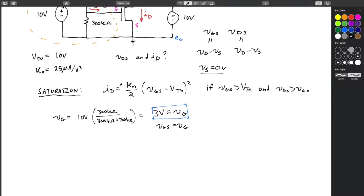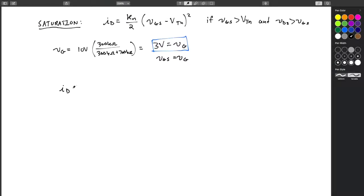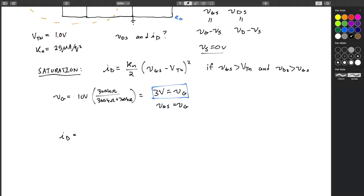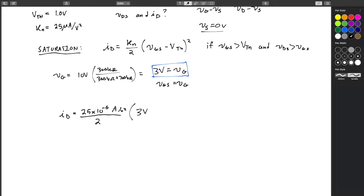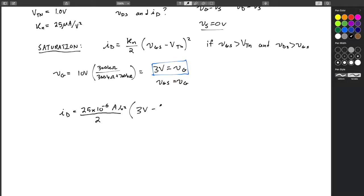So that means we can actually immediately go and solve for current. So ID will equal 25E to the negative 6, or 25 times 10 to the minus 6 amps per volt squared, over 2 times 3 volts, VGS, minus 1 volt for the threshold voltage, squared. Now, what does this actually solve out to? 25 times 10 to the minus 6 amps per volt squared, over 2. This is ending up, 3 minus 1 is 2, 2 squared. So this is actually a 4.